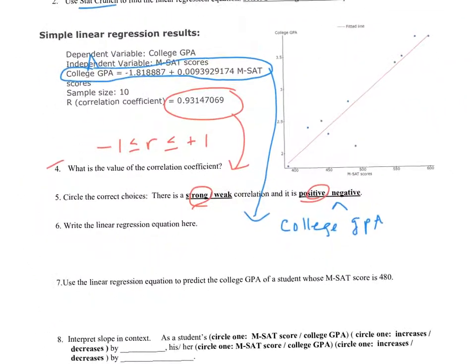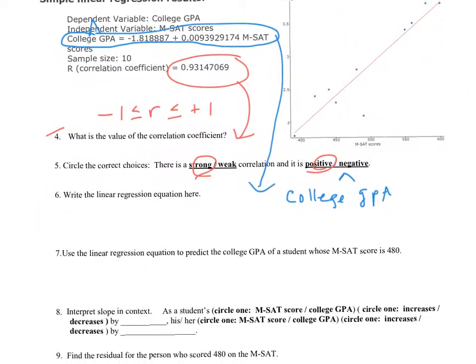Okay, so let's say a student has a math SAT score of 480. Well, then we're going to predict their GPA should be roughly, and I'm just rounding here in the notes, negative 1.82 plus 0.009 times 480. So if you work that out without so much rounding, you should get 2.69. So that's what we predict the GPA will be for a student who has a 480 math SAT.